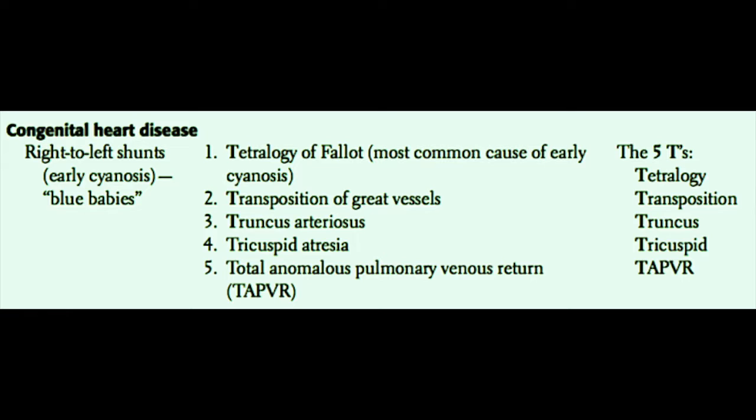They include the tetralogy of Fallot — remember, tetralogy of Fallot is the most common cause of early cyanosis or blue baby syndrome. Also transposition of the great vessels, primarily D-transposition, not L-transposition, which we will talk about later. Truncus arteriosus, tricuspid atresia, and total anomalous pulmonary venous return, or TAPVR.